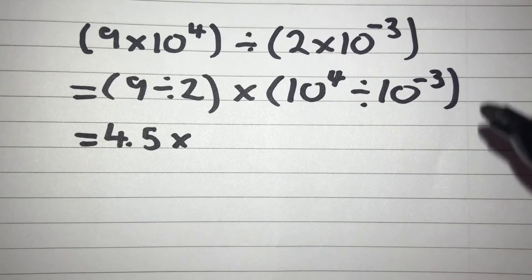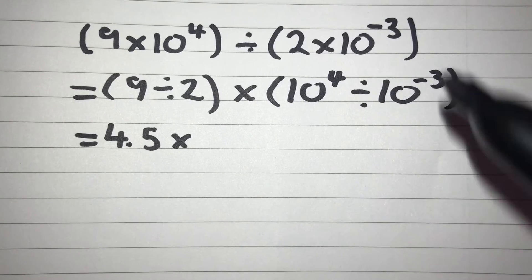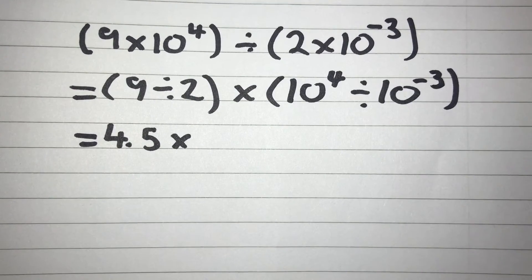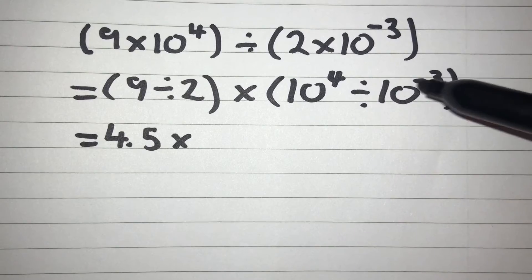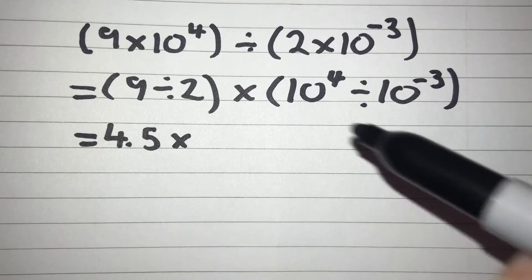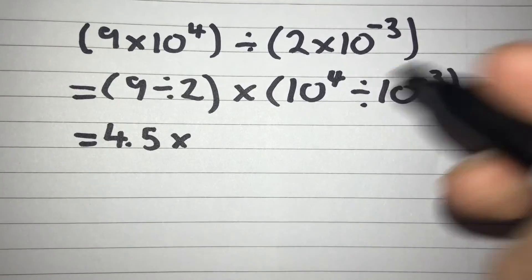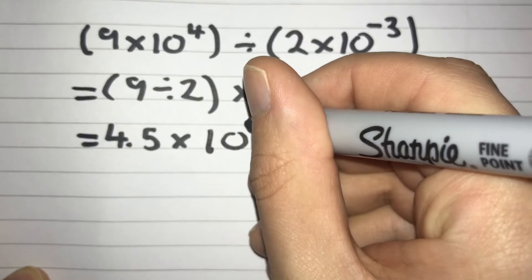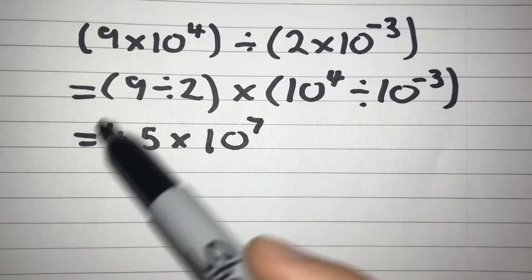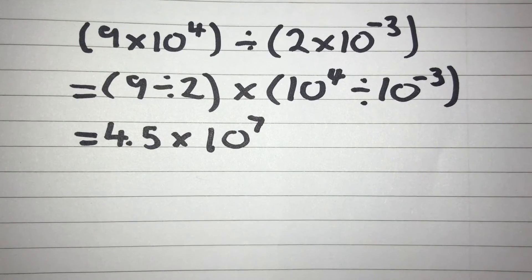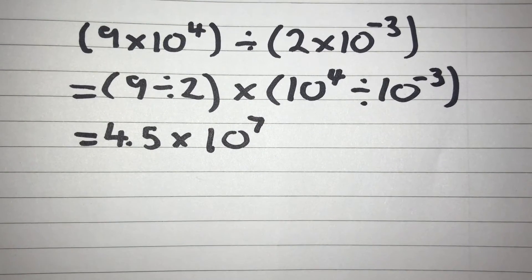Well, if we take away a negative we're going to go up rather than go down, which we normally do when we subtract. So 4 take away negative 3 actually gives us 10 to the power of 7. So the answer we get for this one will be 4.5 times 10 to the power of 7. We've got our number between 1 and 10 and we've got a power of 10, so our format is fine and we leave our answer as 4.5 times 10 to the power of 7.